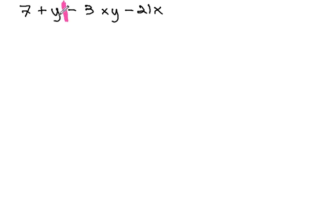On the left side, we look for a GCF, but when there is none, we'll just factor out 1, giving us 7 plus y.